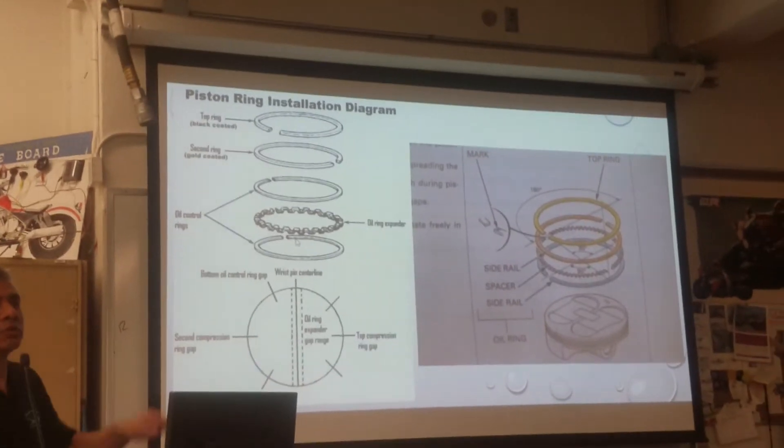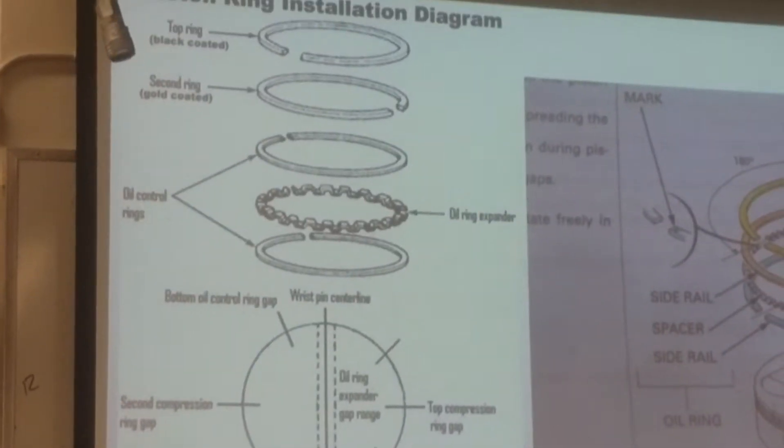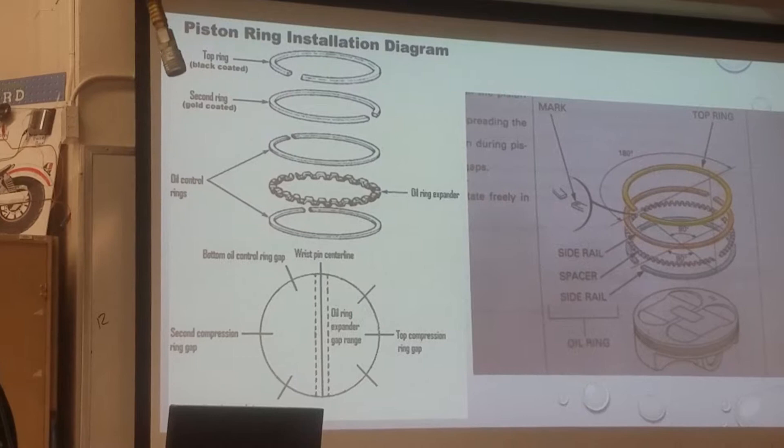Again, we're talking about what? Four-stroke engine, right? We're not talking about two-stroke engine, because two-stroke engine doesn't have oil ring.